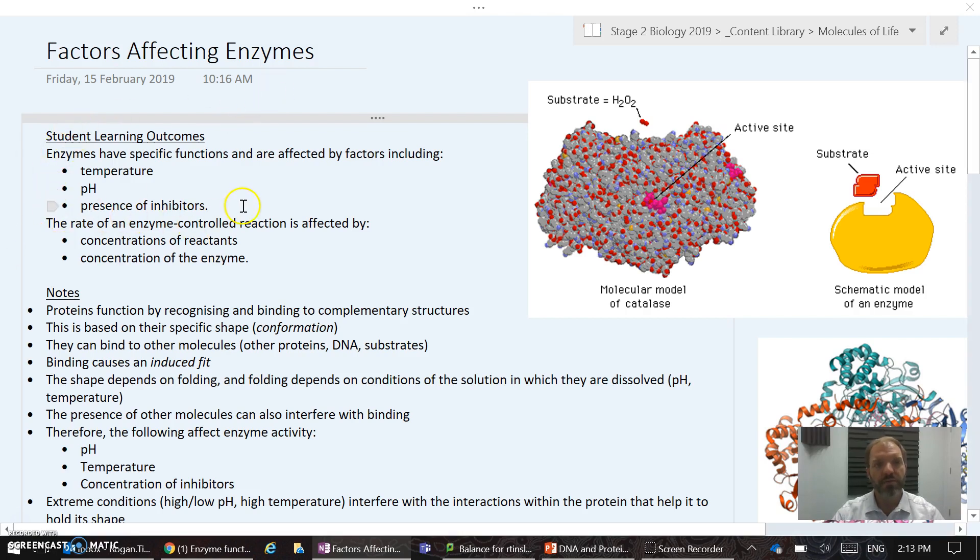In terms of environmental factors, things that will affect enzyme activity include the temperature and pH of the solution in which the reaction is happening, and also the presence of inhibitors. These may be drugs or chemicals that are in the cell, but mostly they're actually produced by the cell itself in order to inhibit or stop a reaction going forward to provide that level of control.